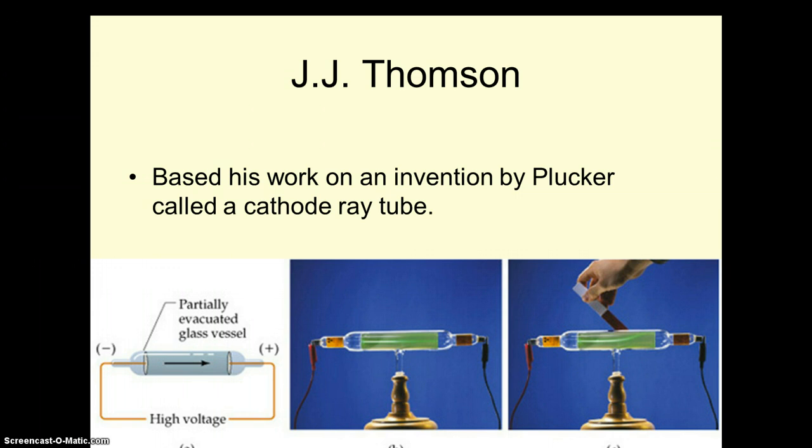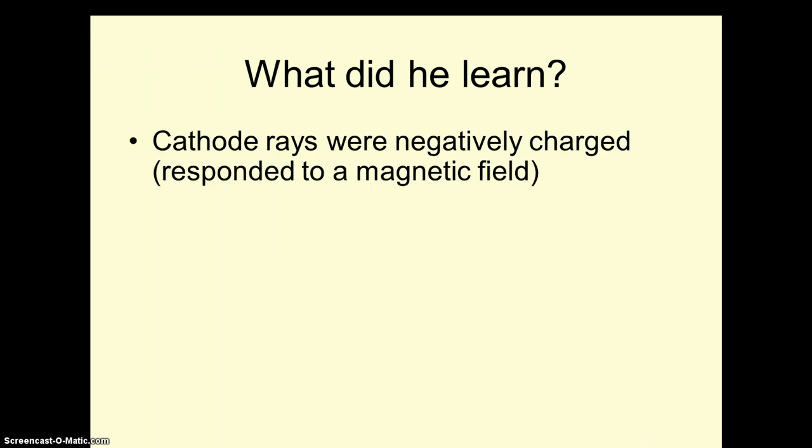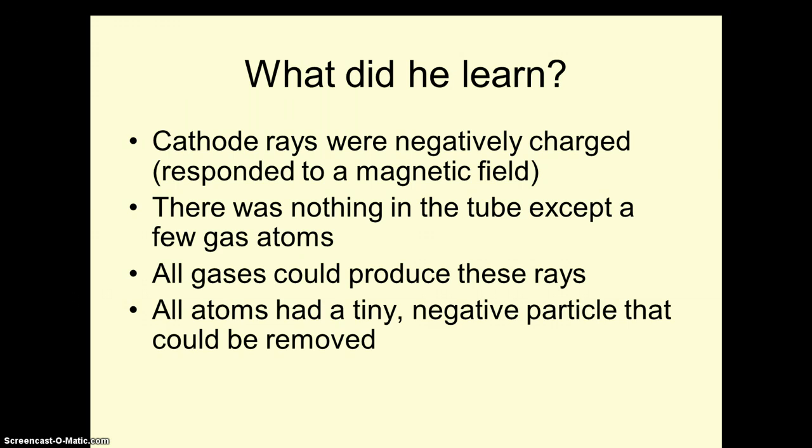Now, J.J. Thompson called these things negative corpuscles, but several others coined the term electron. I'm pretty happy about that. Corpuscle just sounds gross. So what did he learn? Cathode rays are negatively charged. They responded to a magnetic field. And because there was nothing in the tube except a few gas atoms, whatever it was had to come from the atoms. And he found that all gases could produce these rays. So he concluded that all atoms have a tiny negative particle that can be removed.